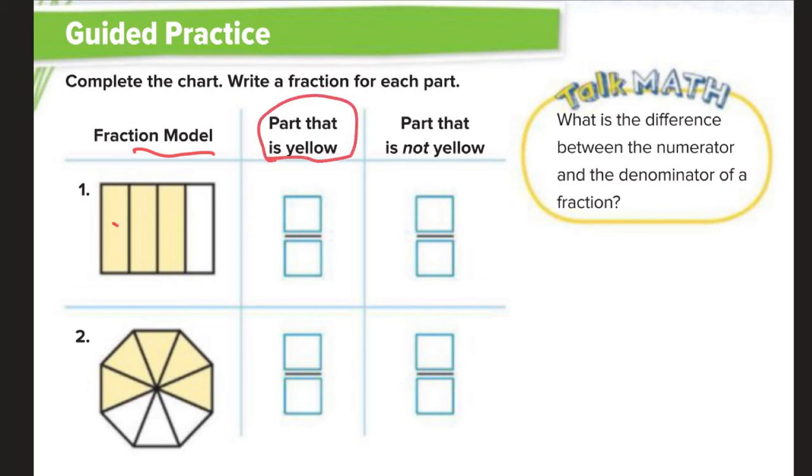So, what fraction of this is yellow? So, we have one, two, three, our pieces are yellow, out of one, two, three, four total pieces.